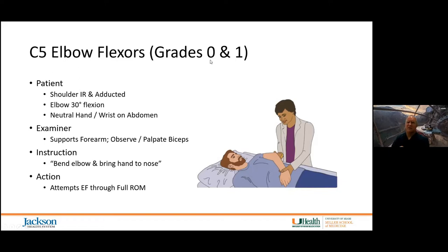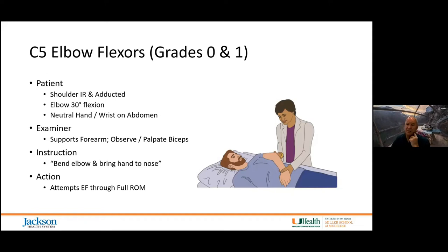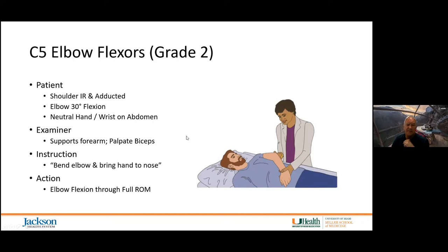For C5 elbow flexors, grades 0, 1, and 2: support the person's forearm, observe and palpate the biceps, and instruct them to bend the elbow and bring the hand to their nose. If there's no flicker of movement, score zero. A flicker but not through full range of motion is a one. To score a two, with gravity eliminated — shoulder internally rotated and adducted, elbow starting at 30 degrees flexion, forearm neutral on the abdomen — they must bring it through the full range of motion.